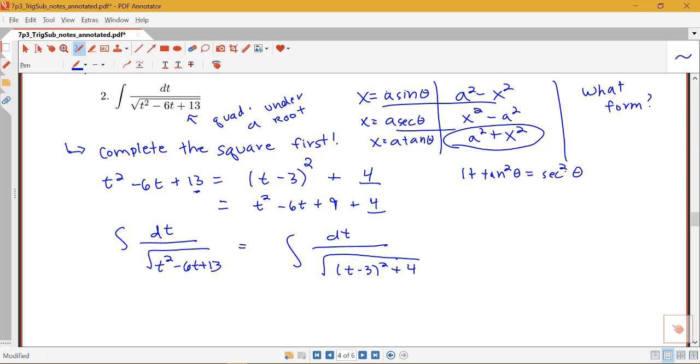Since we know that 1 plus tan squared theta equals secant squared theta. One other little memory trick for remembering that tangent goes with the plus one is you can think of plus and t as being the same kind of thing. So I have a squared plus x squared and then I have the t for tangent substitution with that. That could be one way to remember how tangent goes with that particular form.